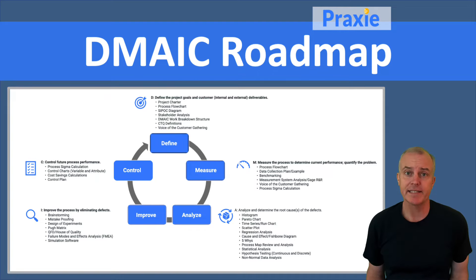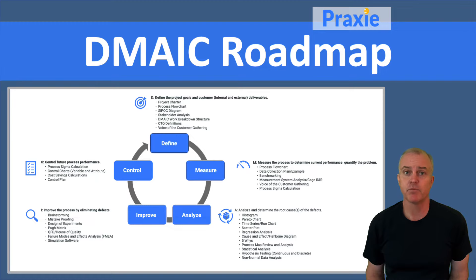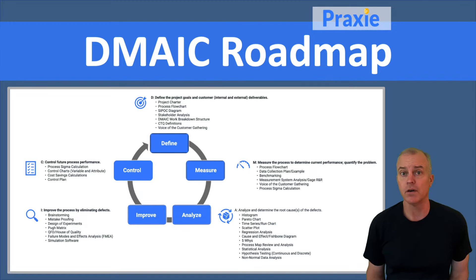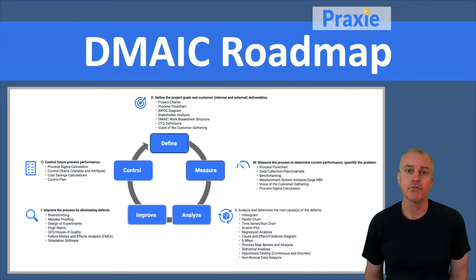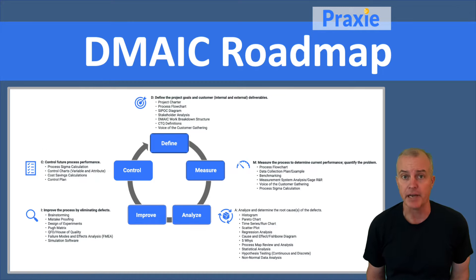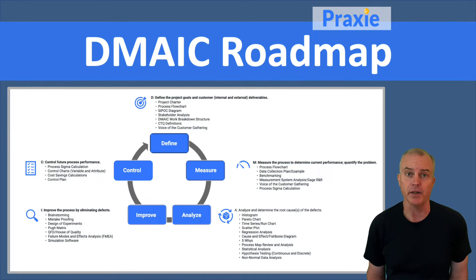DMAIC is a framework in Lean Six Sigma that really provides a roadmap to a successful project or overall program, so that you can go through the different steps. The steps are an acronym for these different labels of the model.